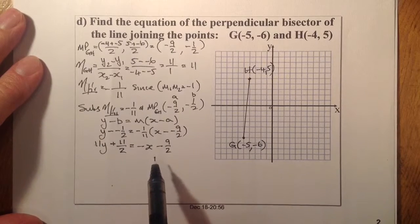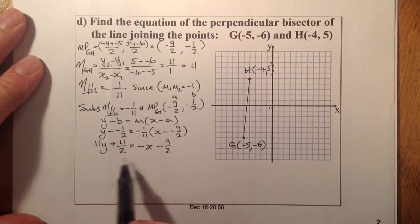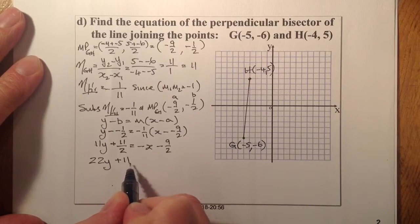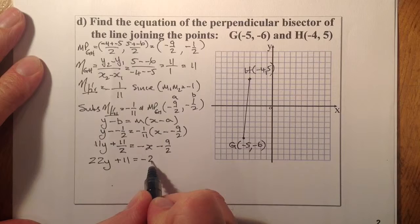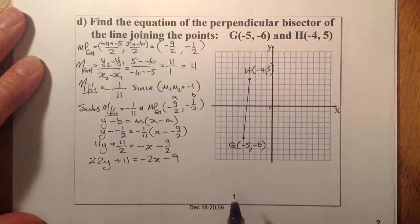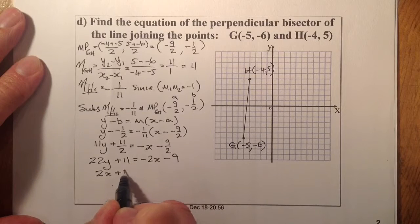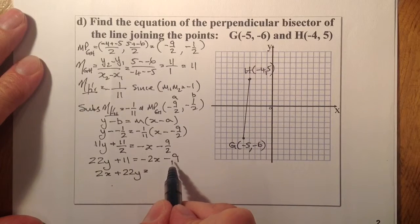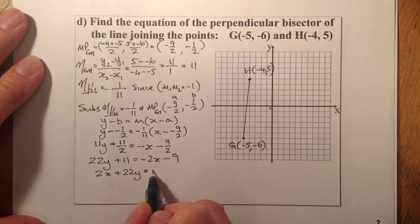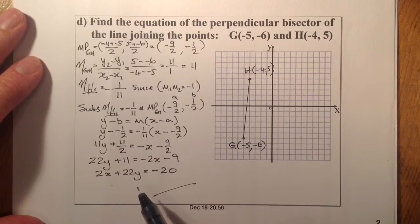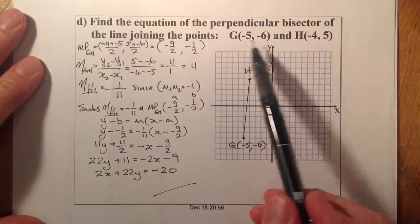To prepare for simultaneous equations, multiply throughout by 2: that gives 22y plus 11 equals minus 2x minus 9. Bringing minus 2x to the left gives 2x plus 22y, and bringing 11 over becomes minus, giving minus 20. So the equation is 2x plus 22y equals minus 20. That gives the perpendicular bisector of the line joining these two points.